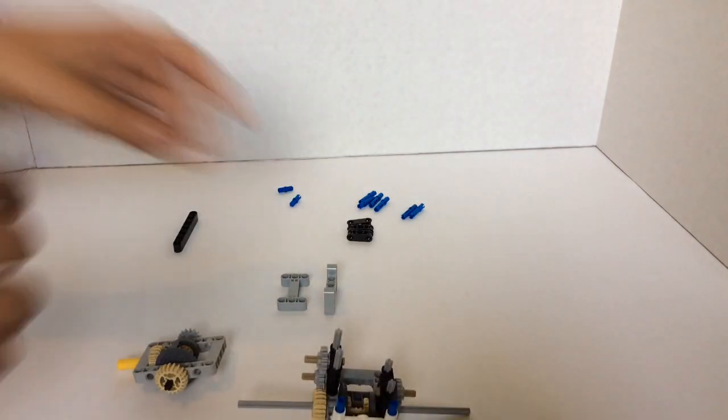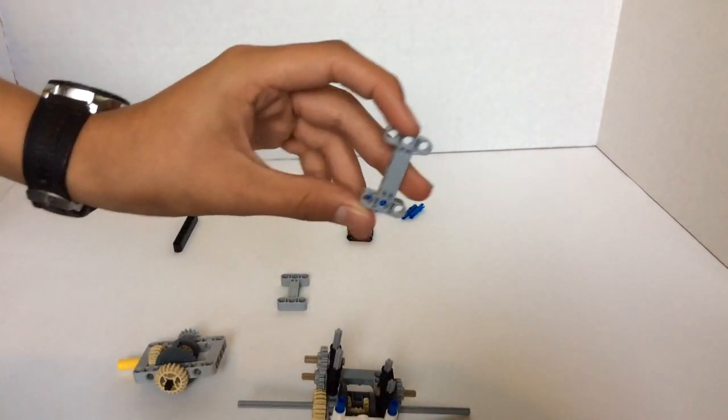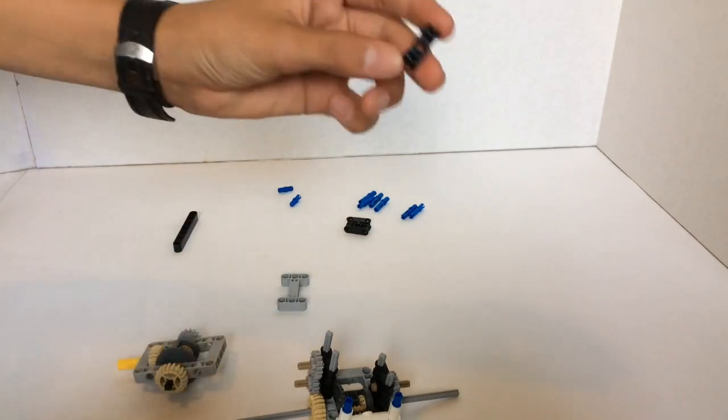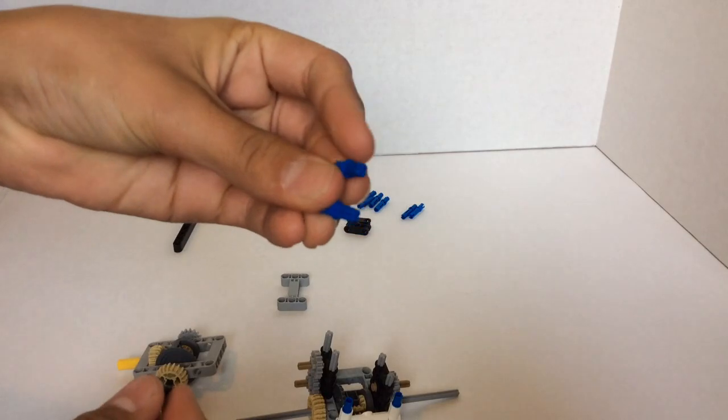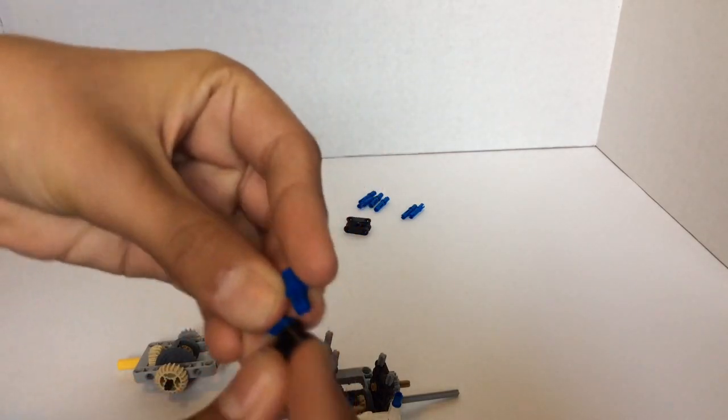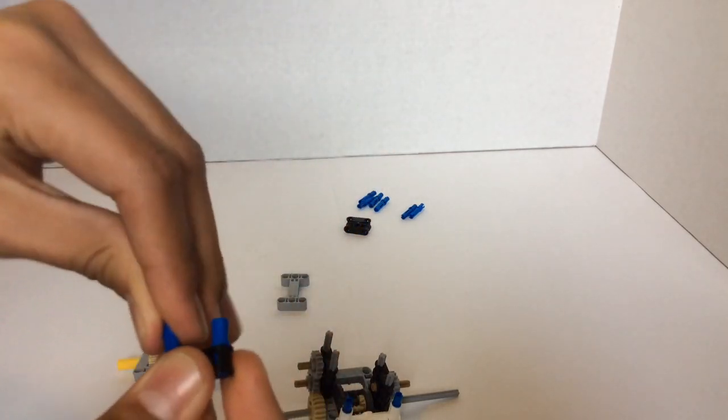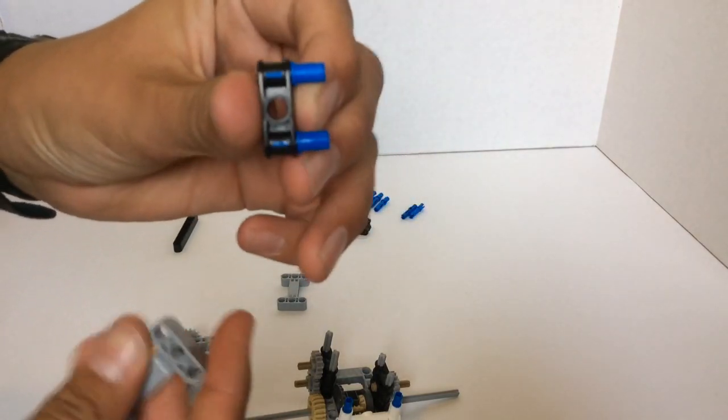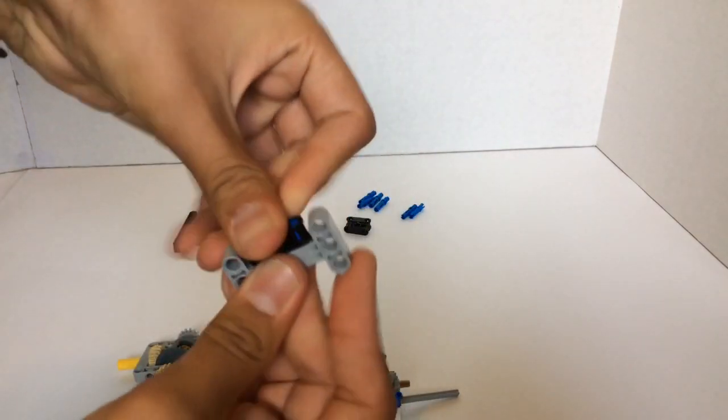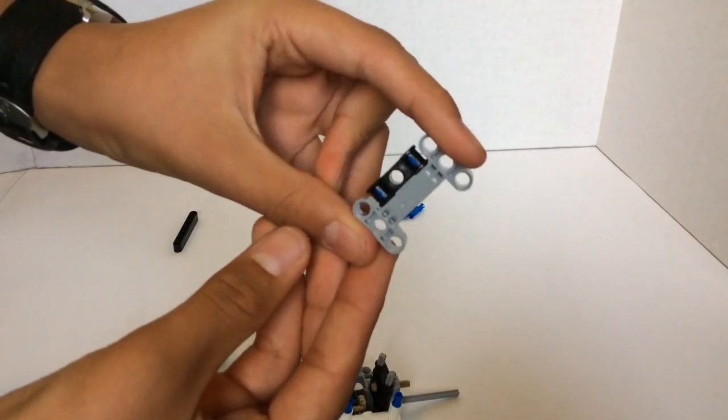And then we're going to take one of the I-pieces and a black three stud beam and then the remaining small pins. So you have something that looks exactly like this. And then put that on the side there.